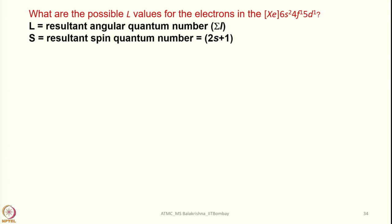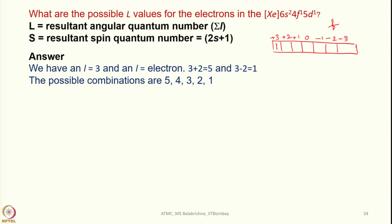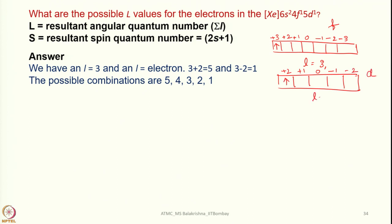For the f orbital, the possible ml values are +3, +2, +1, 0, −1, −2, −3, so for one electron L = 3. For the d orbital, ml values are +2, +1, 0, −1, −2, so for one electron L = 2. Therefore sigma L = 3 + 2 = 5 combined.